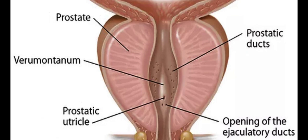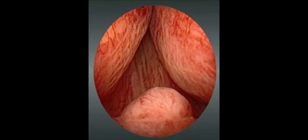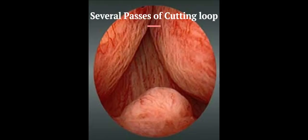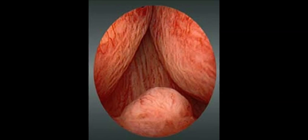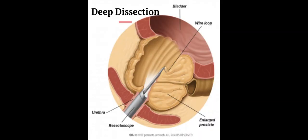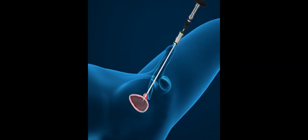The resection is performed with pure cutting current to minimize cauterization of the delicate ejaculatory ducts. Often, several passes of the cutting loop are required to visualize the ejaculatory duct openings within the prostate. This can mean relatively deep dissection in a small prostate gland, a situation that can make even an experienced transurethral surgeon feel uneasy.